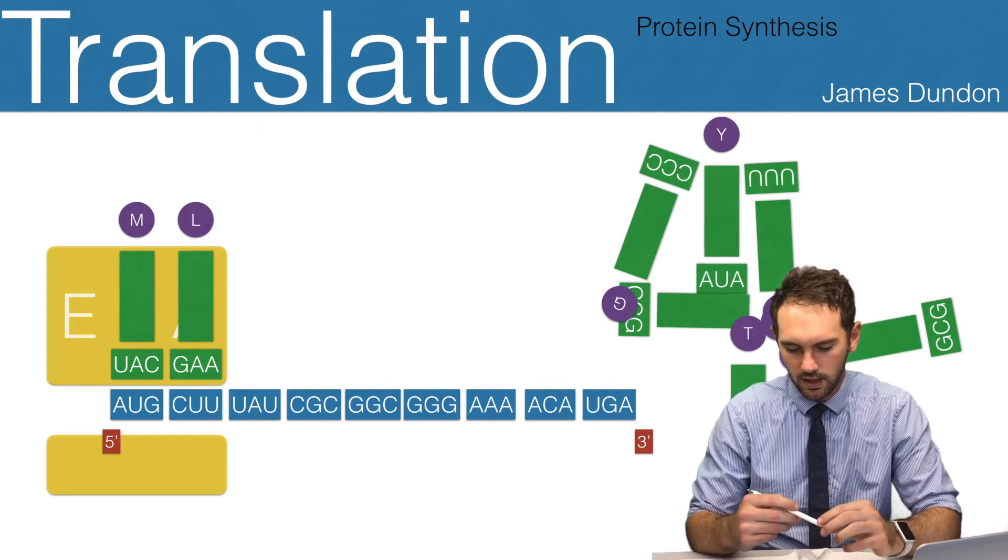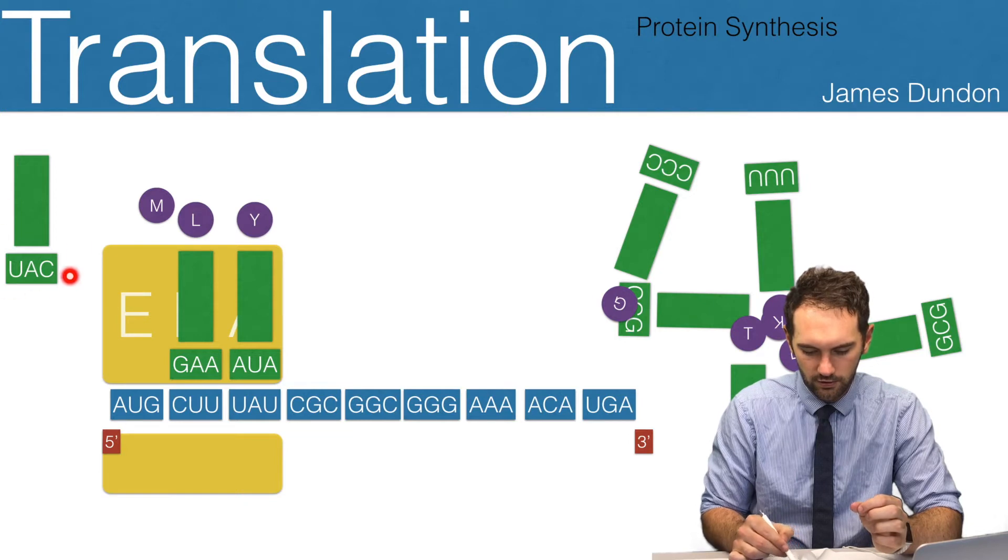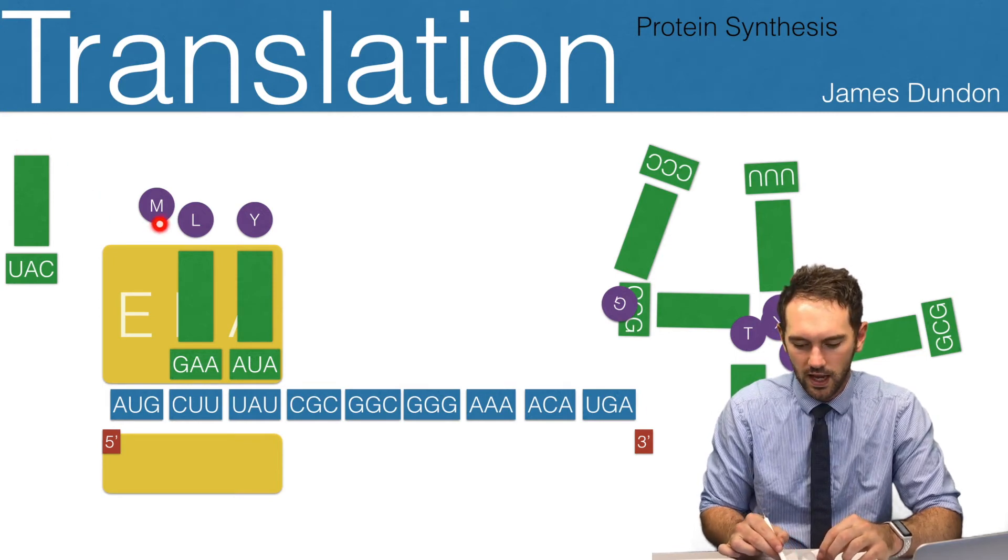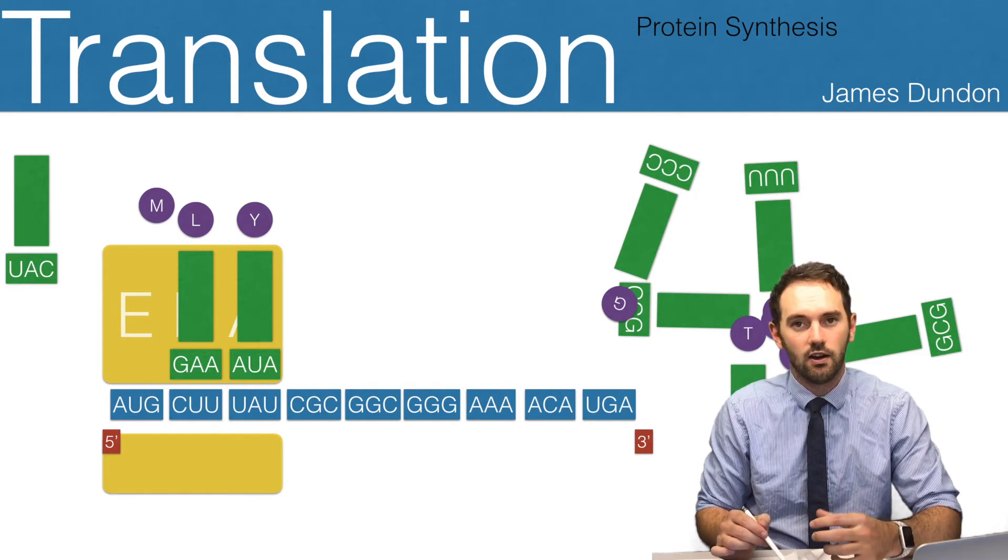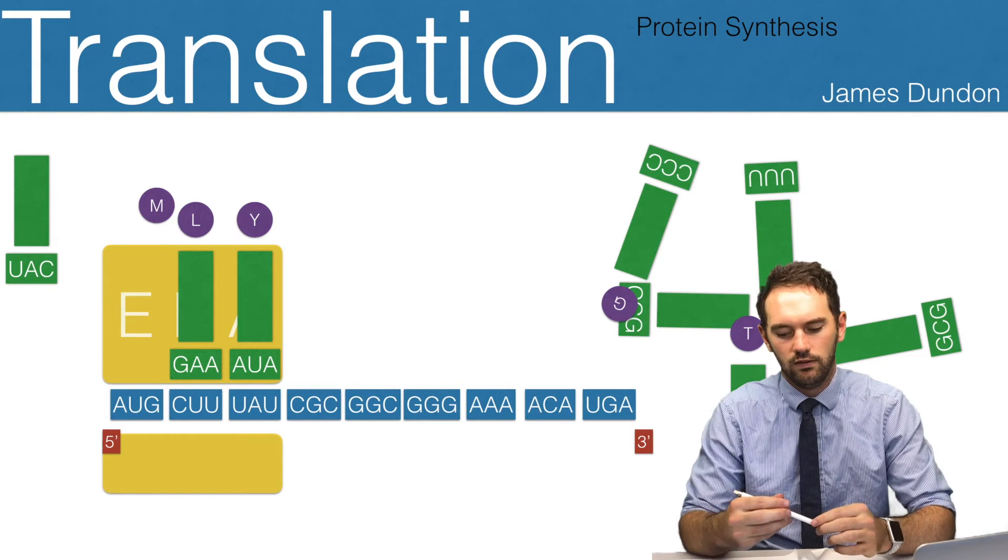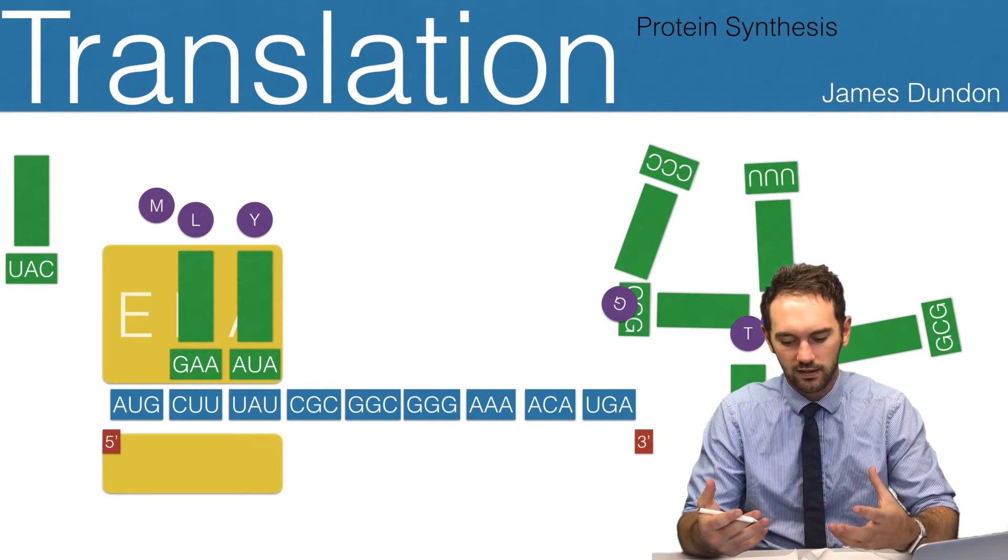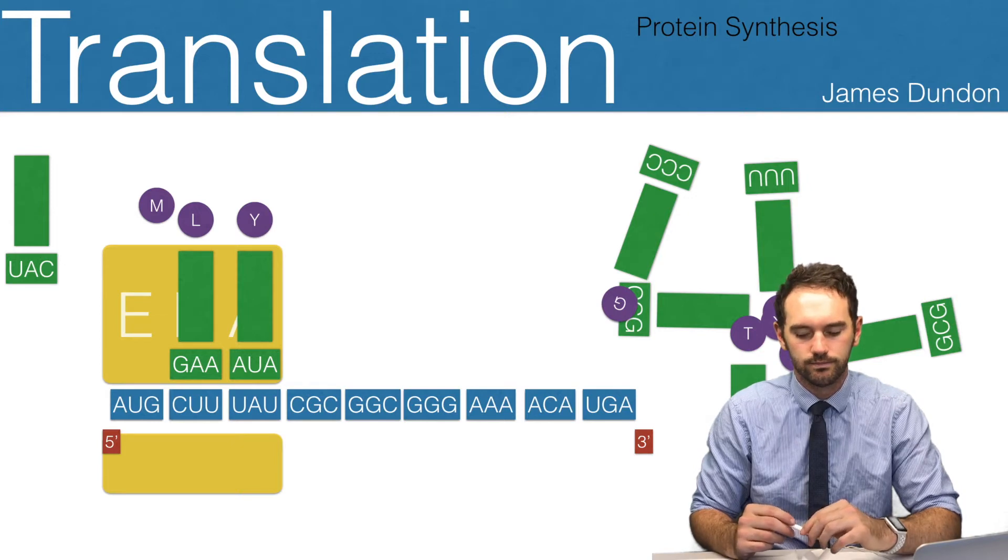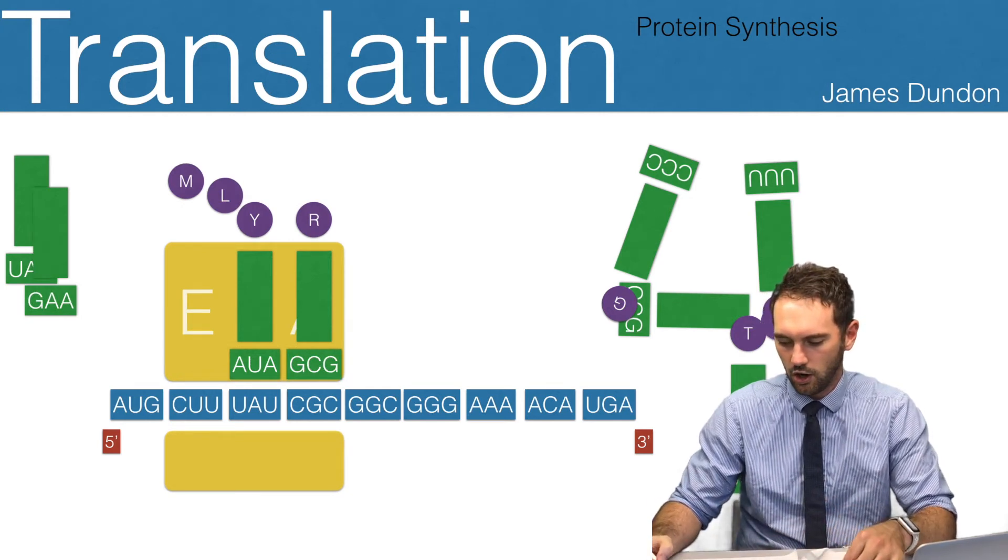What's going to happen next? We now get the ribosome to shift along one more. You'll notice that our UAC transfer RNA has left through the exiting site and no longer carries its amino acid. The reason it doesn't carry it is because that methionine has been bonded to the leucine amino acid next to it. Now the leucine or GAA transfer RNA is in the processing site. The processing site is now going to form a covalent bond between the leucine and the tyrosine amino acids.